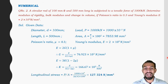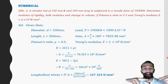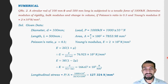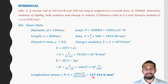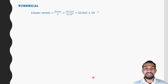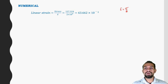Longitudinal stress: when pulling, stress acts along the length — this is longitudinal stress = P/A (load upon area). Calculating stress = 127.2323 N/mm². Linear strain = stress / Young's modulus E, since E = stress / strain. Calculating linear strain = 63.662 × 10⁻⁵.